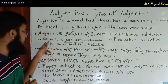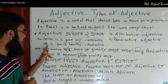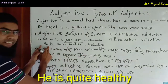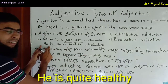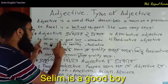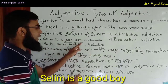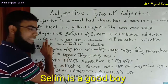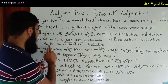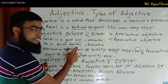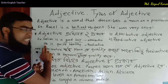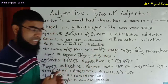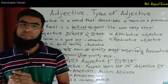For example: He is quite healthy — here 'healthy' is a predicative adjective qualifying the pronoun 'he.' And: Salim is a good boy — here 'good' qualifies the noun 'Salim' directly, so it is an attributive adjective. 'Good' comes before the noun in attributive use.